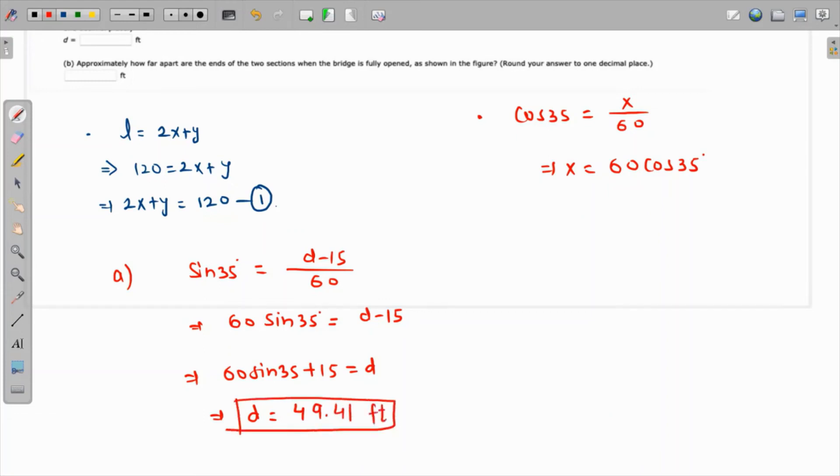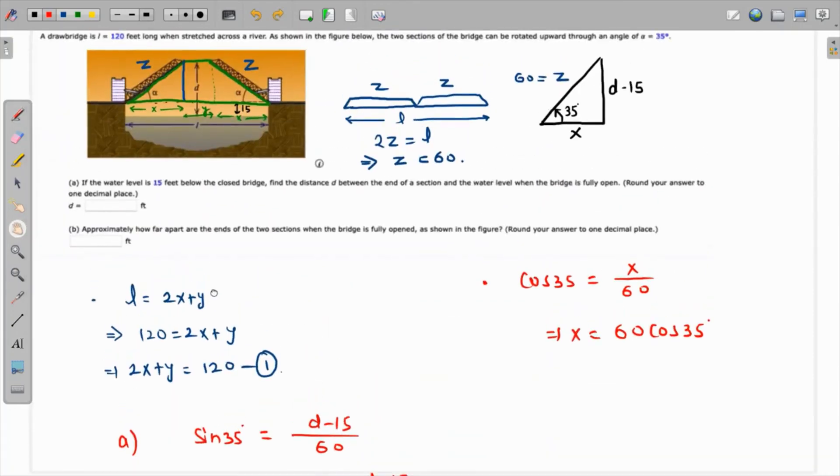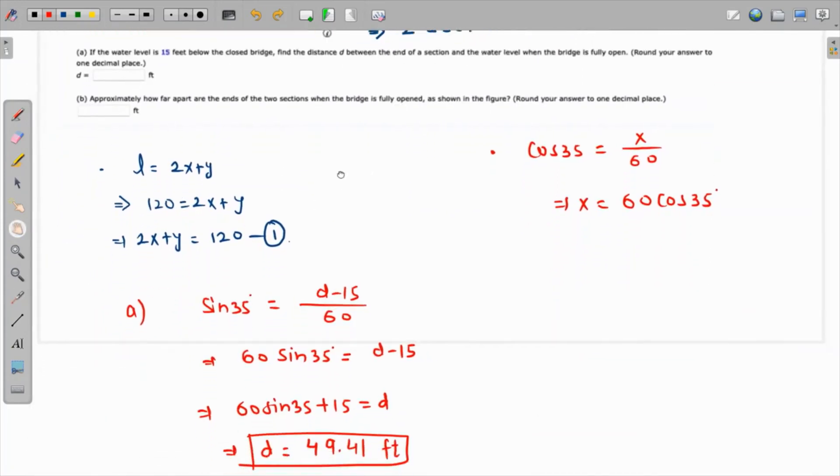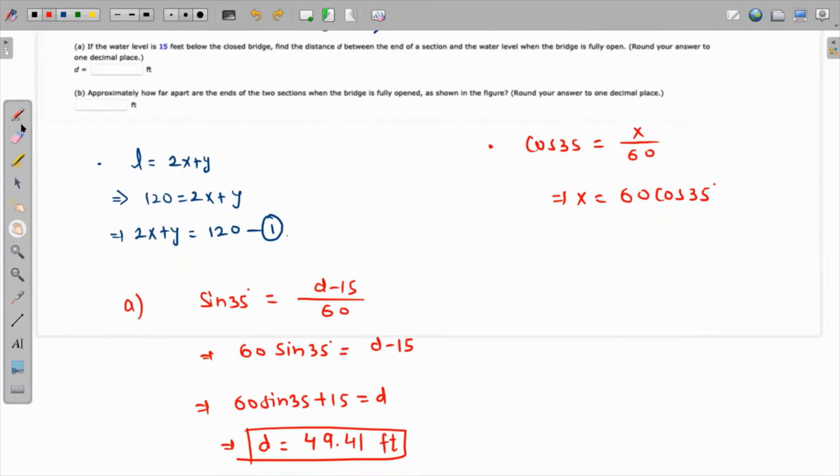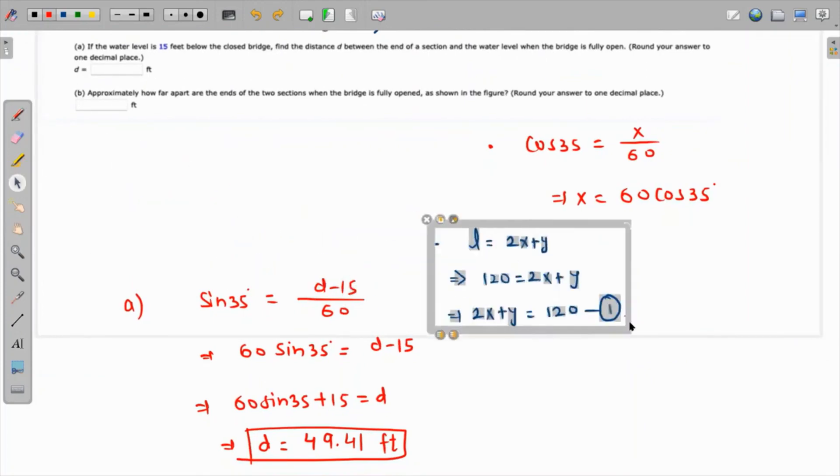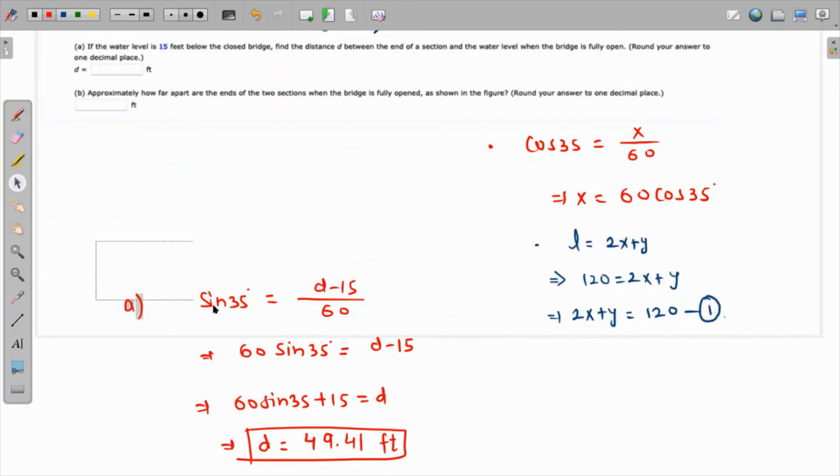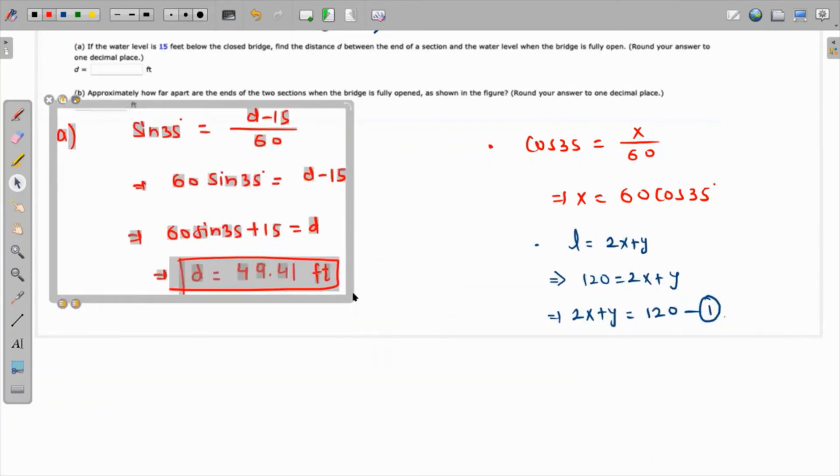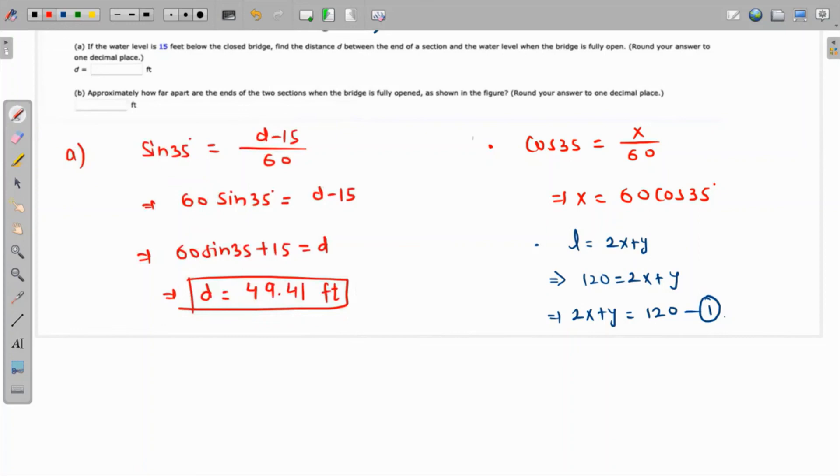Finally, we have to find out how far apart are the ends of the two sections when the bridge is fully open. In short, we need to find the value of y, because y is the distance between the two sections when the bridge is totally open.